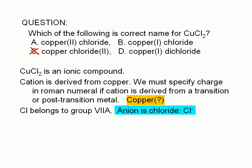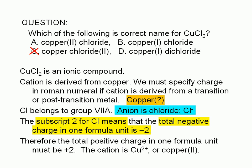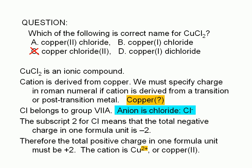Chlorine has a subscript of 2, which means the total negative charge in one formula unit of this compound is negative 2 — 2 times negative 1 equals negative 2. Therefore, the total positive charge in one formula unit must be plus 2. Since there is no subscript written for copper, it's implied to be 1, so one copper ion in this compound must have a charge of plus 2.